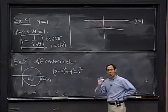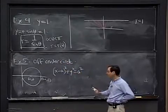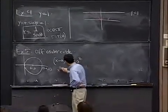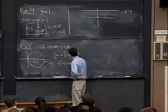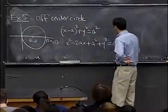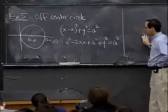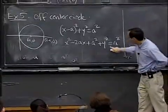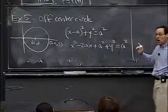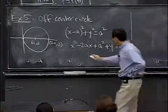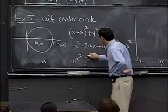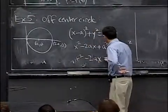But I'm going to do it more quickly than that, because I can sort of see in advance how it's going to work. I'm just going to expand this out. And now I see the a² cancel. And not only that, but x² + y² is r². So this becomes r² - 2ax = 0.